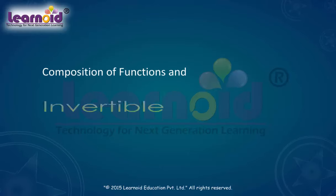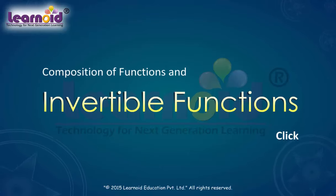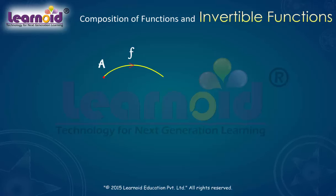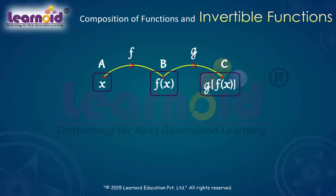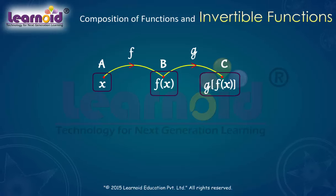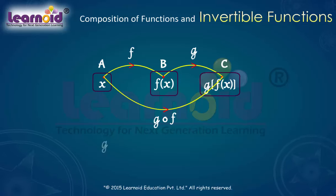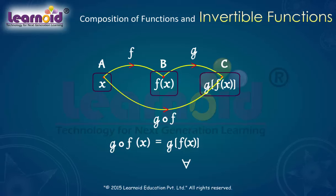Composition of function and invertible function. Let f such that A to B and g such that B to C be two functions. Then the composition of f and g is denoted by gof, and is defined as the function gof from A to C, given by gof(x) = g(f(x)) for all x belonging to A.